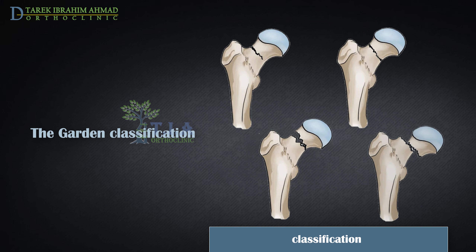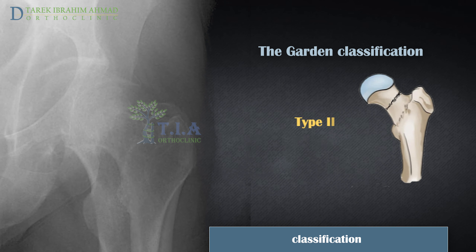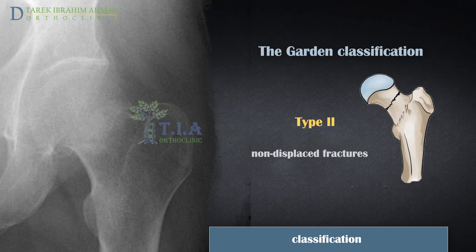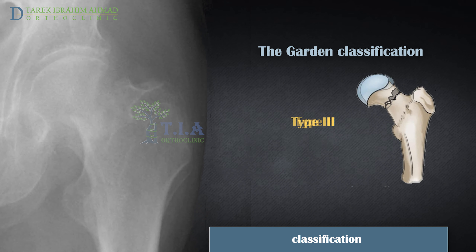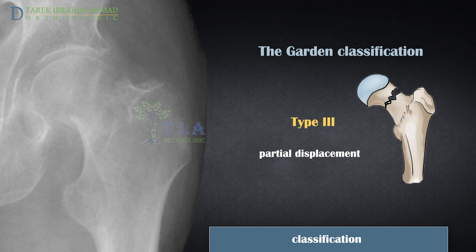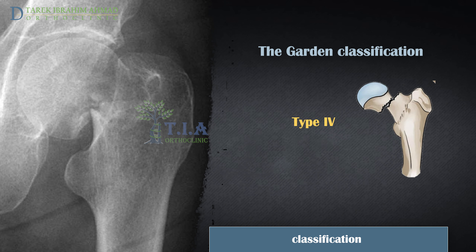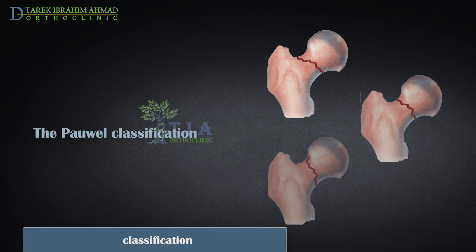Classification. The Garden classification scheme is based upon radiographic appearance and categorizes fractures into four stages. Type 1 fractures are incomplete fractures. Type 2 fractures are complete fractures without displacement. Type 3 fractures are complete fractures with partial displacement. Type 4 fractures are complete fractures with full displacement of the shaft relative to the head.